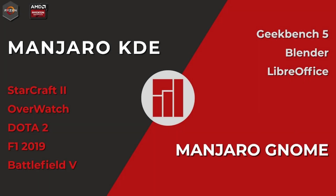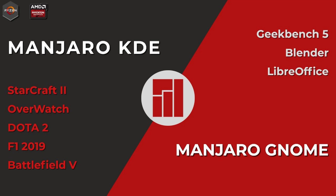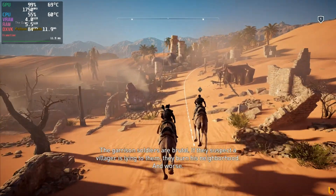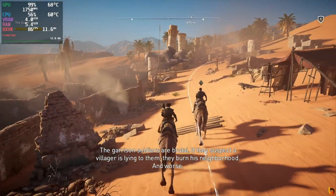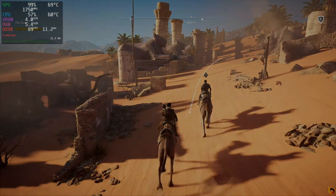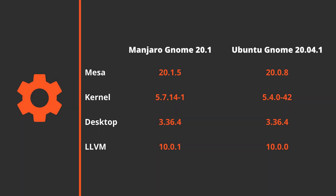Recently I did a video where I compared Manjaro KDE to Manjaro GNOME and I was curious how Ubuntu performs. I didn't install a newer MESA or kernel because I wanted to see what the out of the box performance is. At the time I'm making this video, the kernel version of Manjaro is 5.7.14 and the MESA is 20.1.5, while Ubuntu comes with 5.4 and 20.0.8.